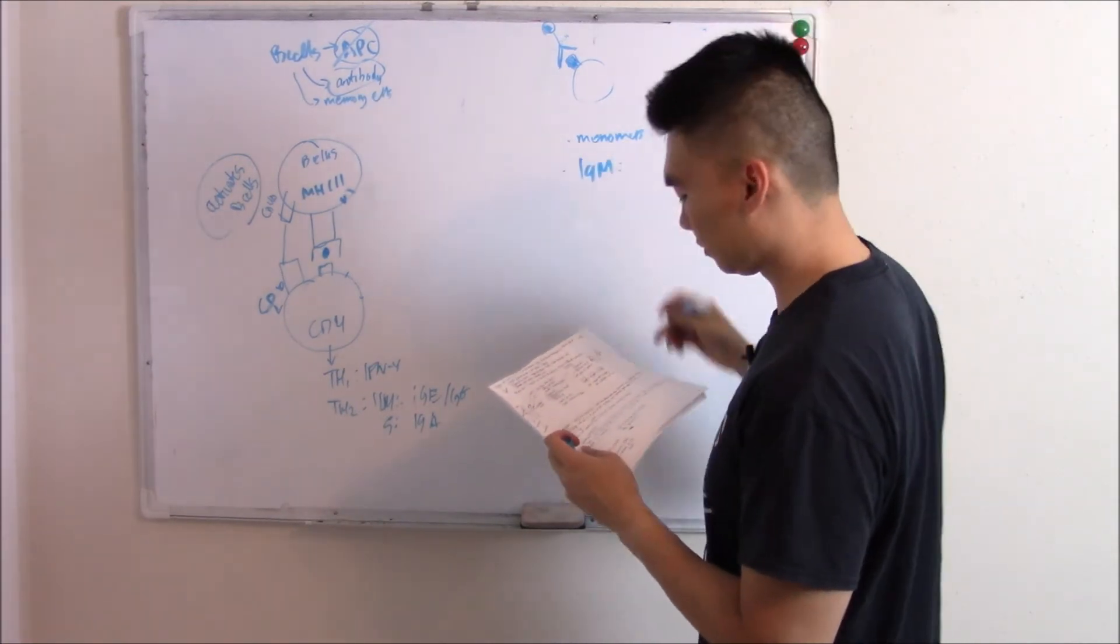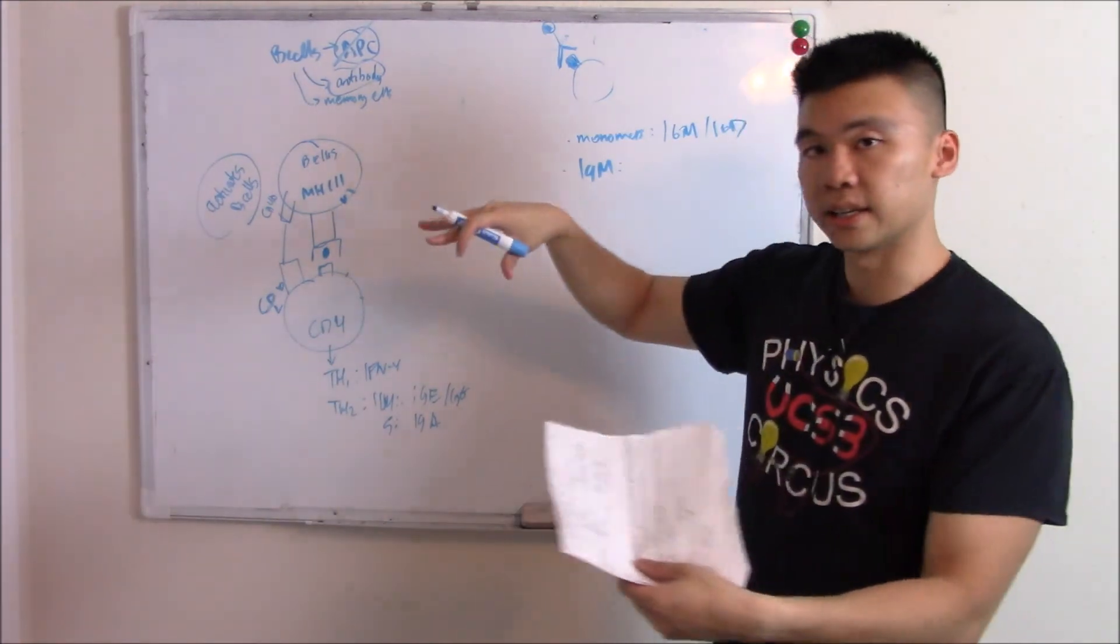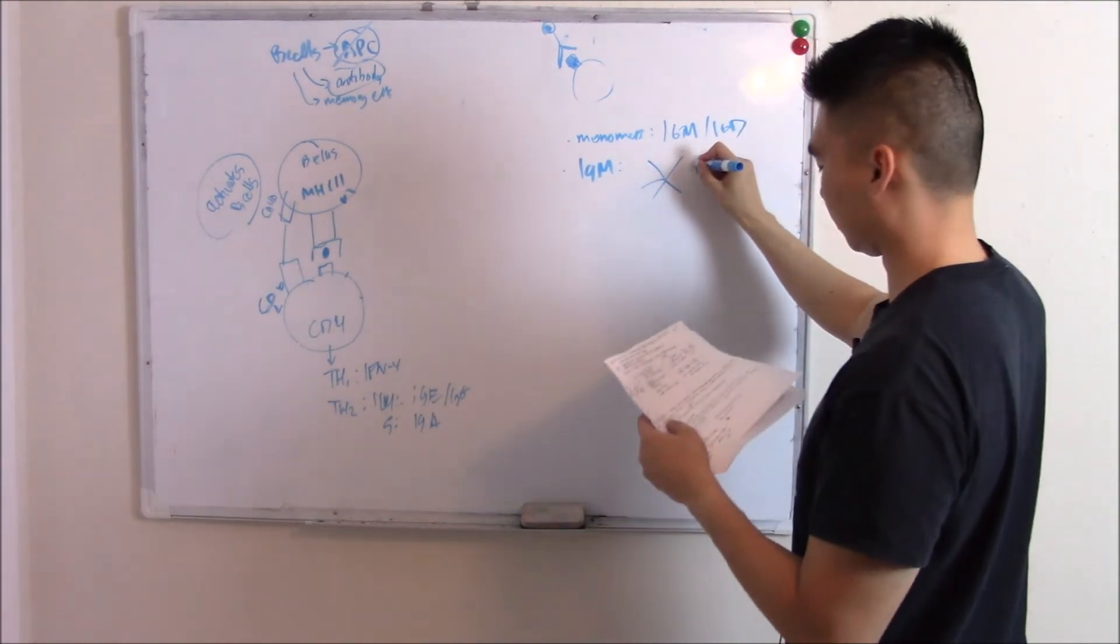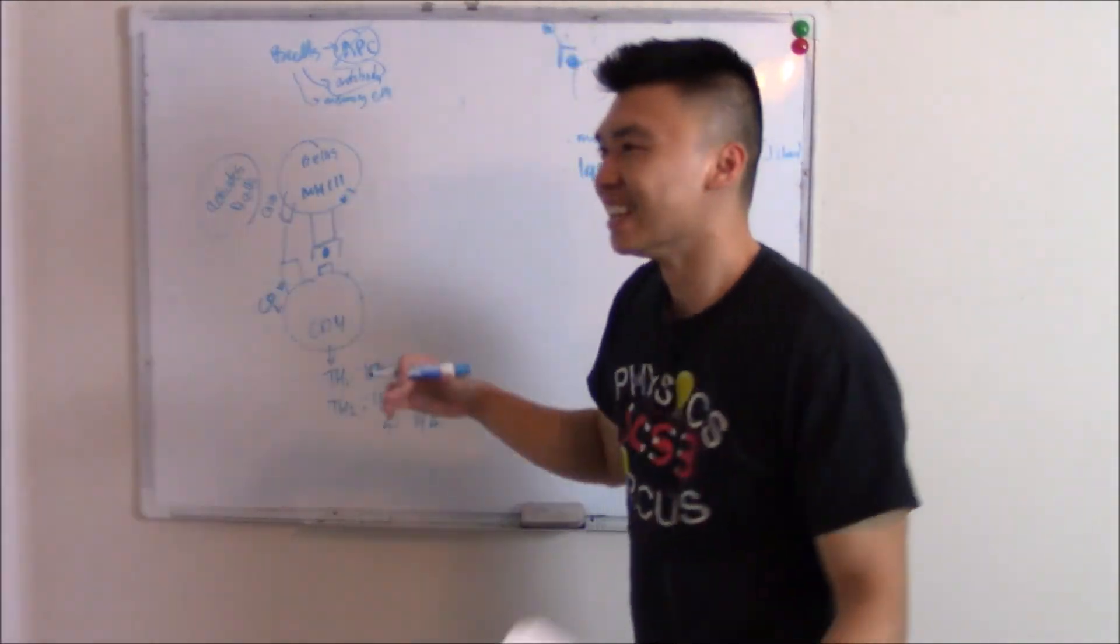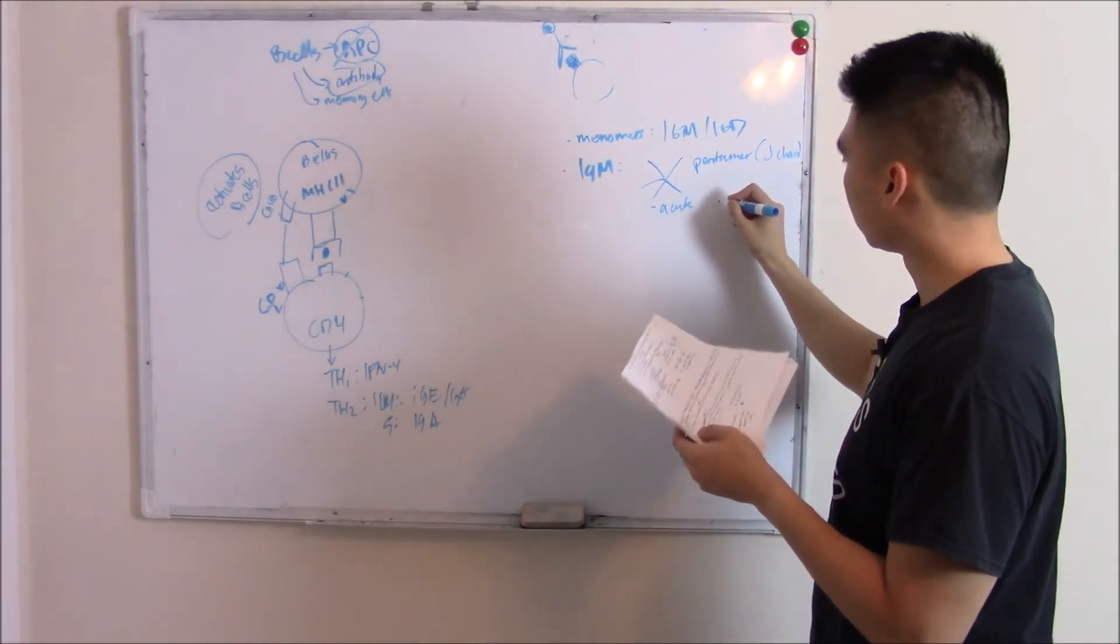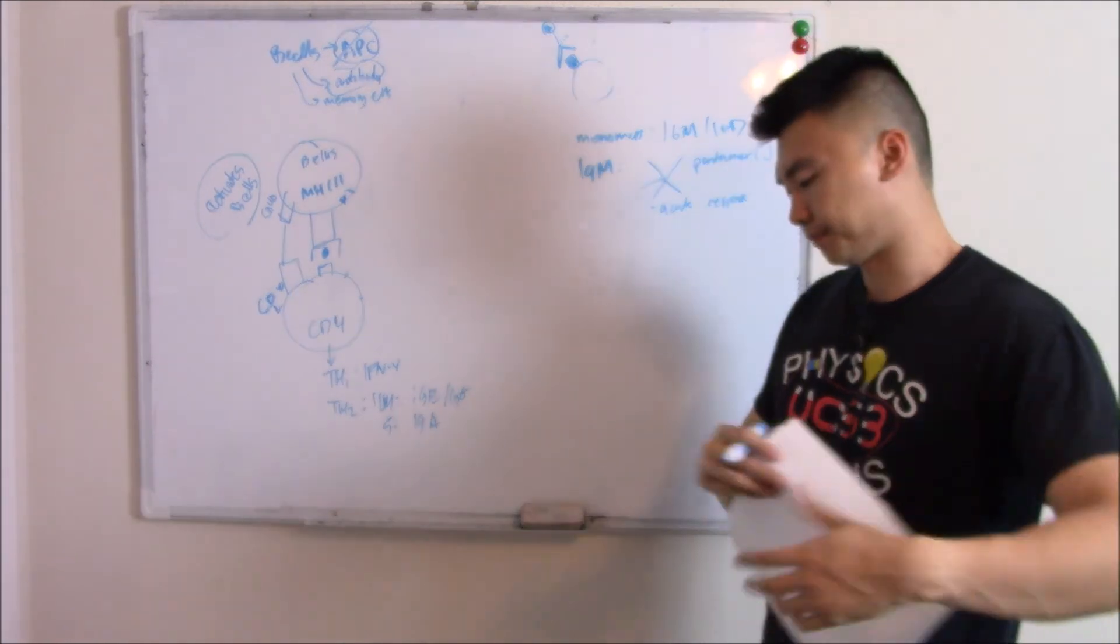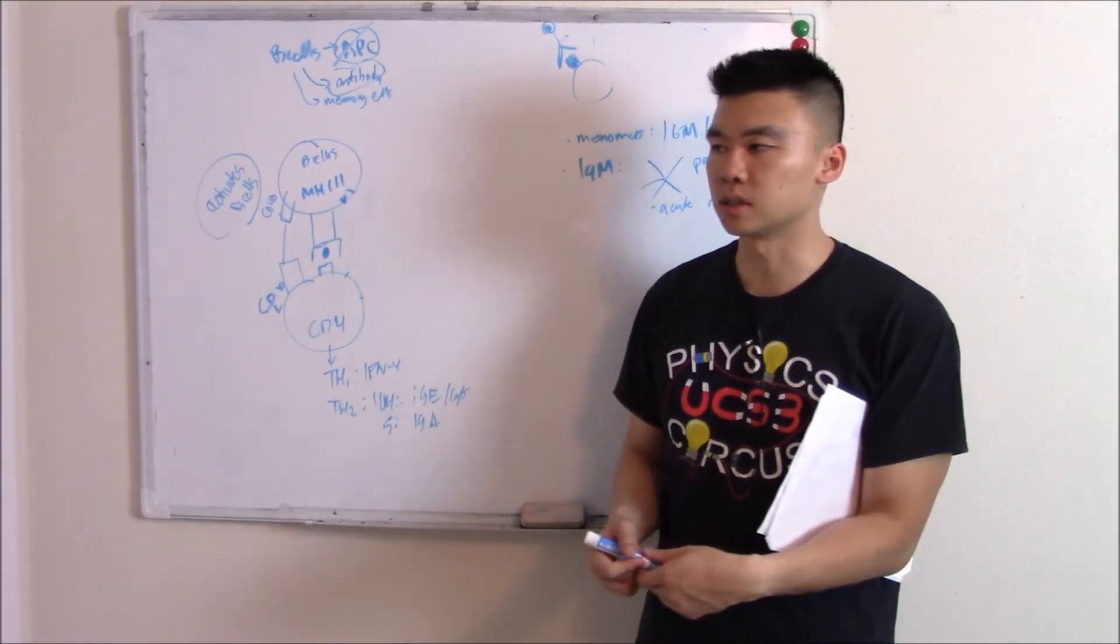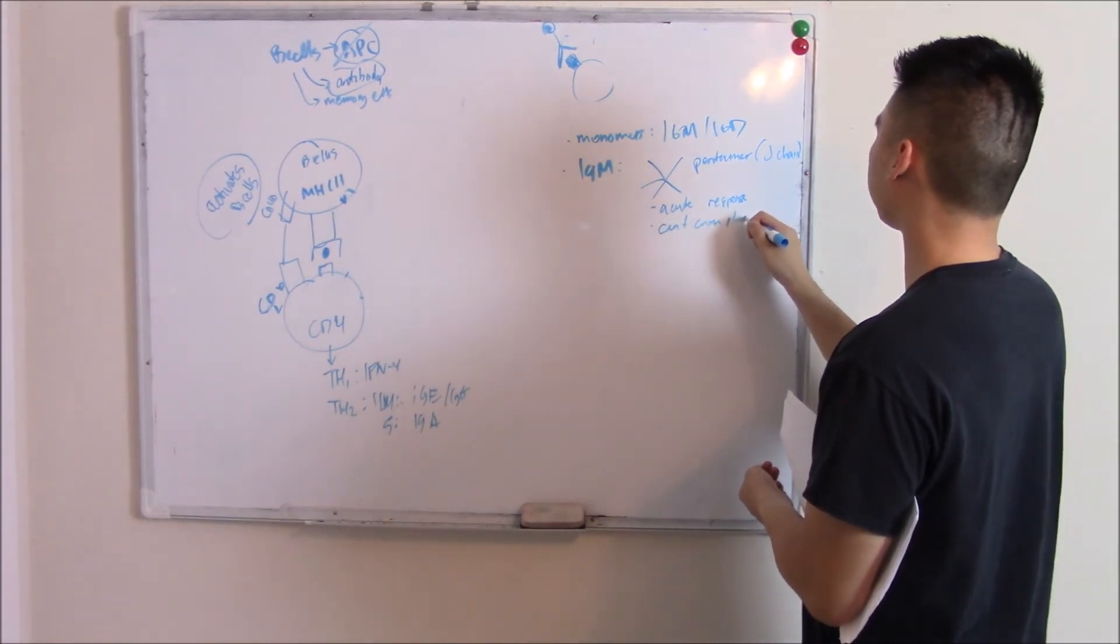So we'll talk about IgM first. IgM starts off as a monomer, as everything starts off as a monomer on your B cell. And once it's secreted into your plasma, it will combine with four other ones and make a pentamer joined by something called a J chain. So it joins together, makes this giant pentamer that kind of just flies through the blood. It's this massive thing. And it's so massive and it has so many arms that it can pick up things right away. So it is seen in acute response. It's great at being the first thing to pick it up. Now your IgM is so huge that it can't cross the placenta. So if you're pregnant and you have a baby and you want to pass some immunoglobulins to kind of help your baby's immune system, you can't pass IgM. It's just too massive.